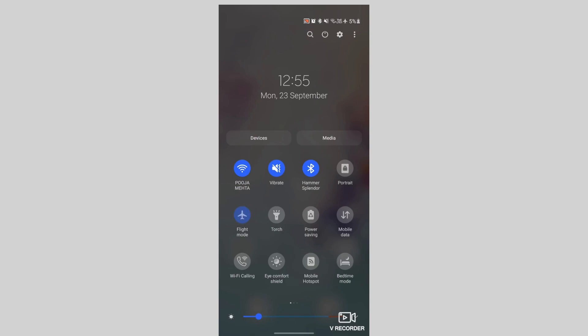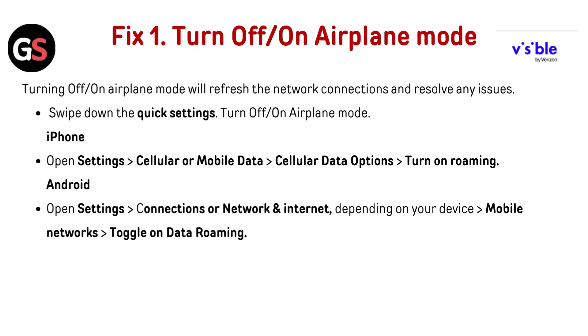Swipe down the quick settings and toggle Airplane Mode off and on. On iPhone, open Settings, go to Cellular or Mobile Data, then go to Cellular Data Options, and turn off Roaming if it is enabled.